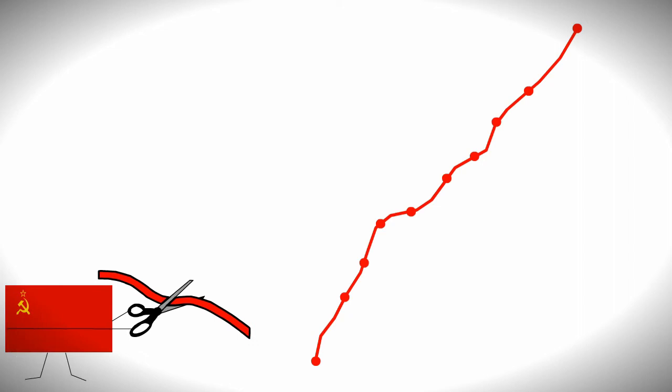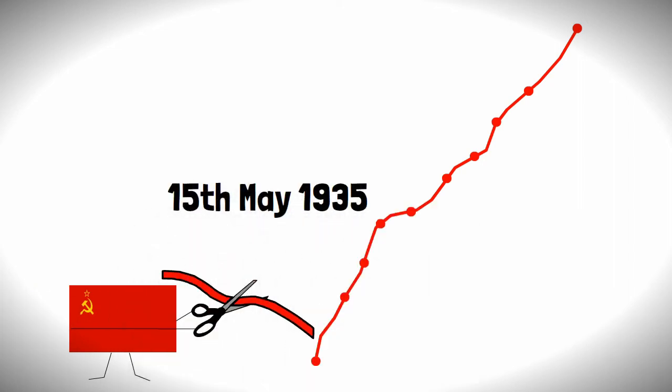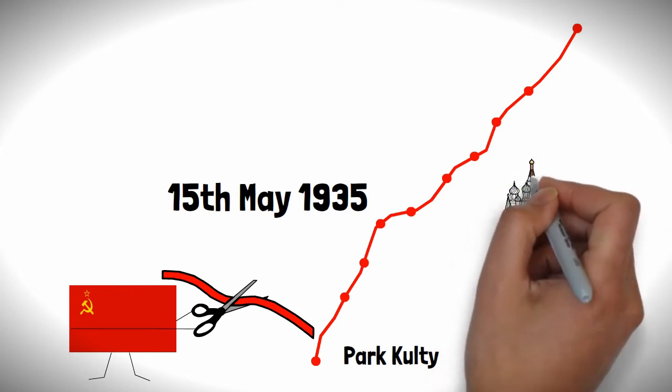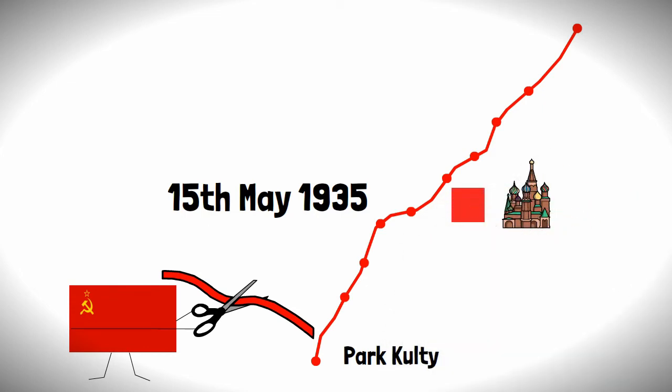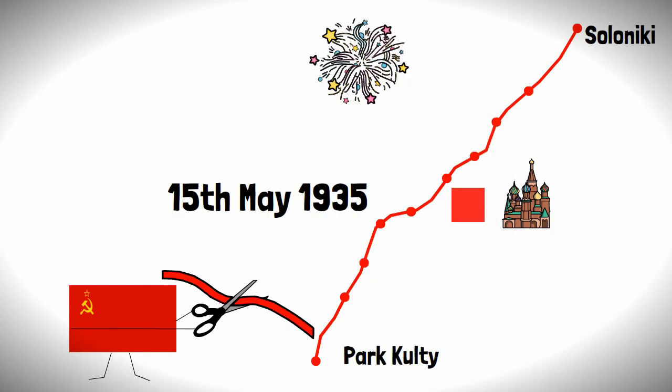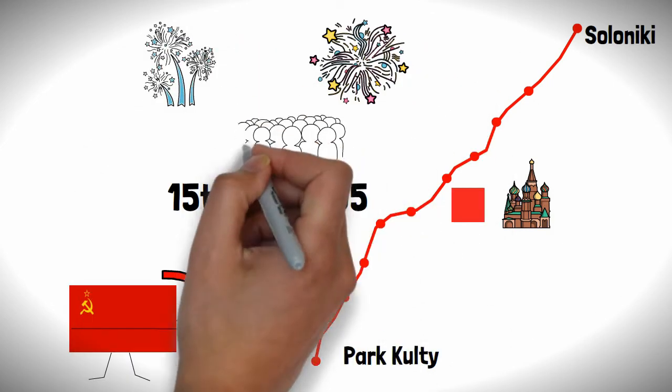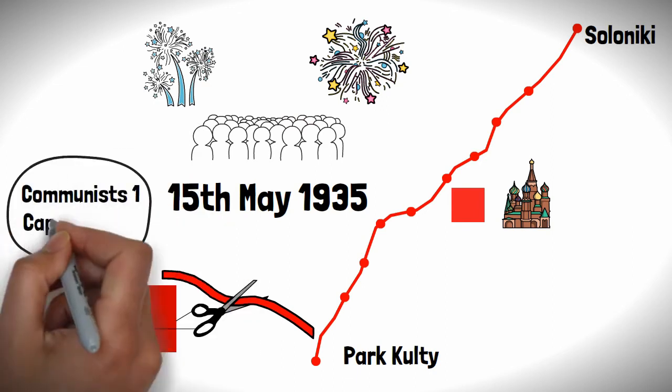The first line opened on the 15th of May 1935, starting at Park Kultury in the southwest of the city, through the center and past Red Square, over to Sokolniki northeast of the center. The line opened to a fanfare of celebrations, large crowds, and some good old capitalism crashing.